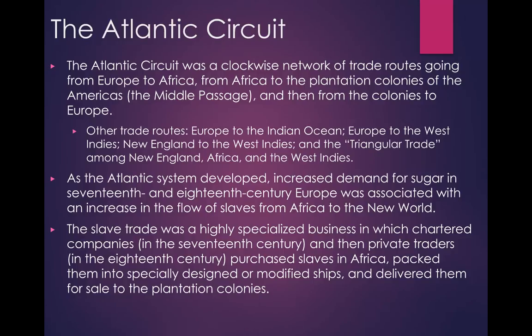Economic competition in the Indian and Atlantic oceans led to political and military conflict. France and Britain fought a tri-continental war, the Seven Years' War, between 1756 and 1763. The Atlantic Circuit was a clockwise network of trade. These routes go from Europe to Africa, from Africa to the plantation colonies of the Americas — referred to as the Middle Passage — and then from the colonies back to Europe. If all went well, a ship would make a profit on each leg of the circuit.